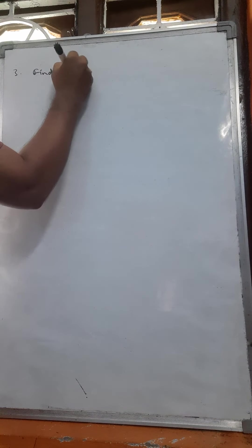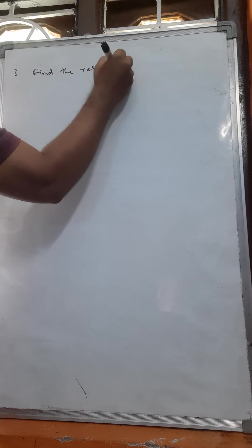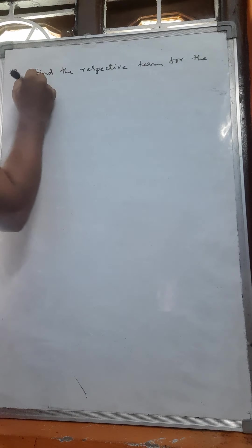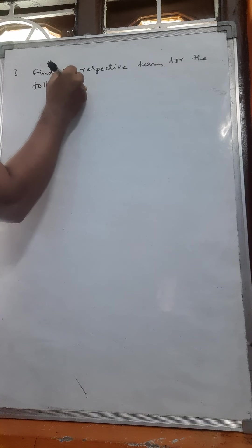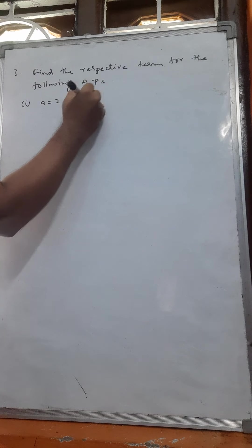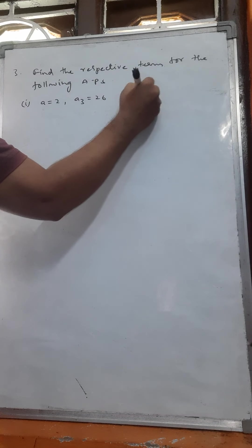Next, continuation of the previous class, the third one. Find the respective term following a, b. It is the first one: a is equal to 2, a3 is equal to 26, find a2.